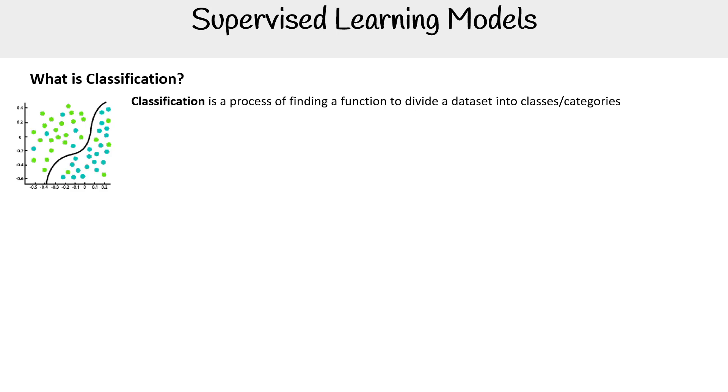Classification is a process of finding a function to divide a dataset into classes or categories. So imagine, will it be cold or will it be hot tomorrow? Very clear, it's either one or the other. It's going to fall on one side of the line or the other one.